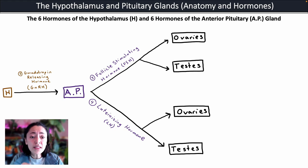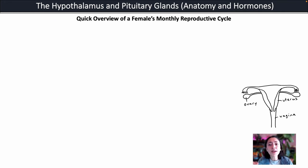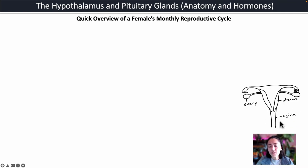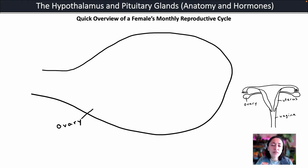To understand what FSH and LH do, we first need a good understanding of the female's monthly reproductive cycle. Here on the bottom right you can see the female reproductive system: the paired ovaries, the uterus, the fallopian tubes (also known as uterine tubes), and the vagina. Let's look at what's happening inside the ovaries.